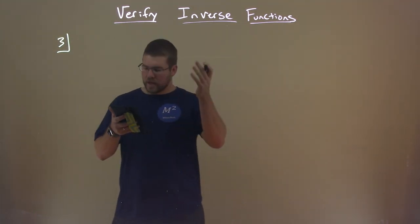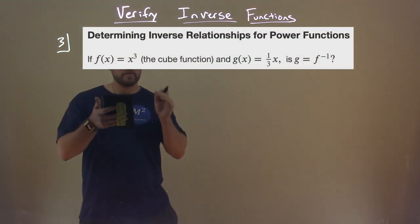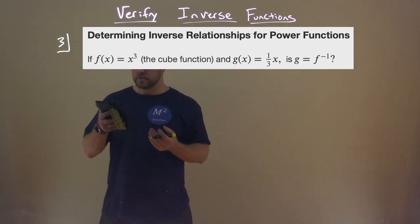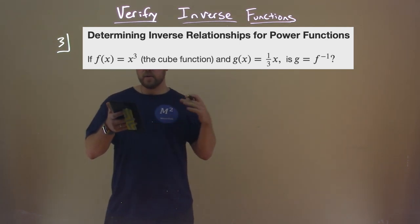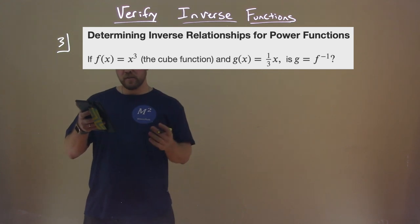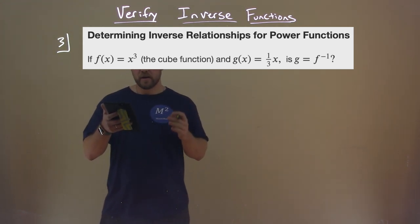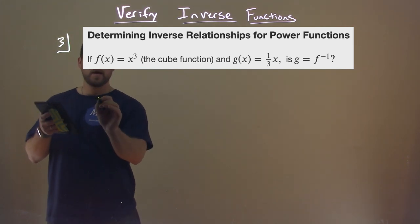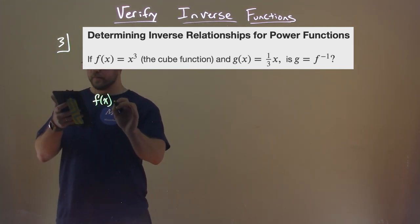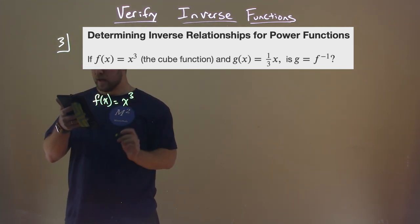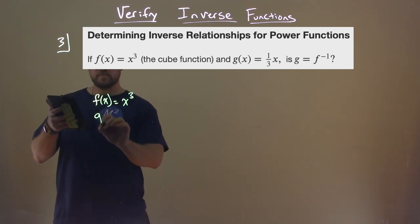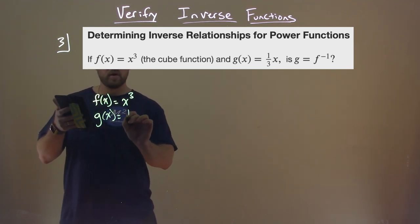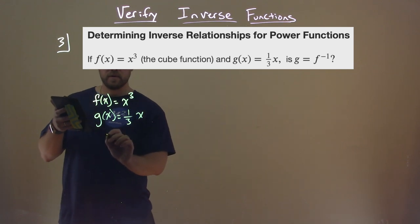We're given determining inverse relationships for power functions. If f of x equals x to the third, a cube function, and g of x equals 1 third x, is g equal to f inverse of x? So f of x is x to the third, and g of x is 1 third x. That's our question.